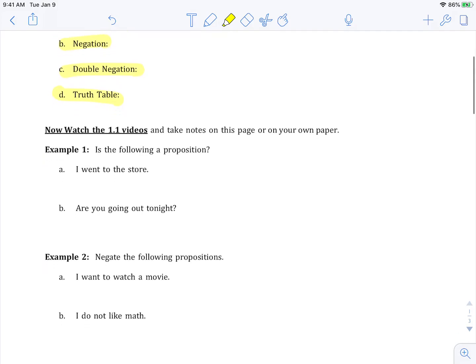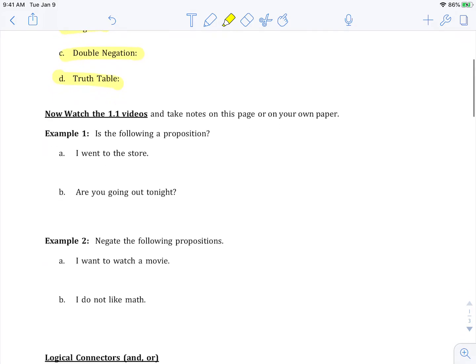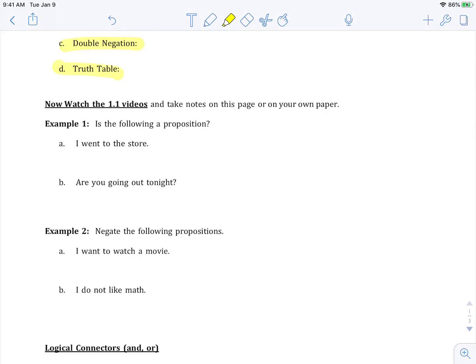Alright so the first two examples we're going to do in this video, we're going to talk about just if something's a proposition or not. And because you did your work and you looked up these terms before you started this video, you know a proposition is a statement that's either true or false. Alright so for example 1a it says I went to the store, well it's a statement so it makes that a complete sentence is another way to say that, and I know it's true or false, either you did or you don't, so this is a proposition.